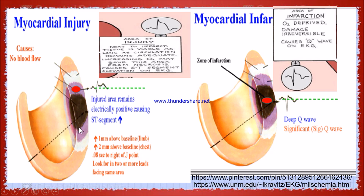Because the injured area is electrically positive, there will be a positive change — only ST segment elevation. Remember: when there is ischemia, ST segment depression occurs due to lack of blood supply and delayed repolarization. When there is injury, the area is electrically positive and ST segment elevation will be there — elevation above the baseline of 1 mm in limb leads and 2 mm above the baseline in chest leads.